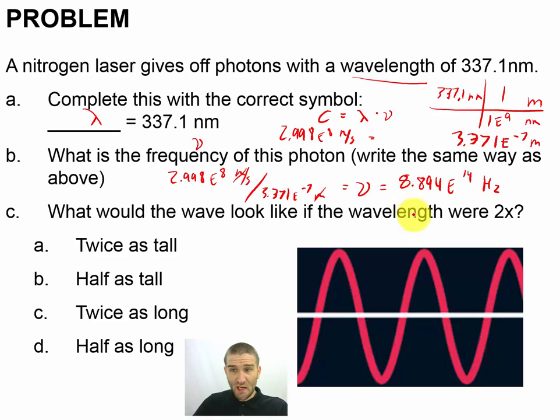Now, what's the wave going to look like if we double the wavelength? Remember, wavelength tells me that it's going to be this piece right here. So if I double the wavelength, it's going to be twice as long. Those are the answers for this problem.